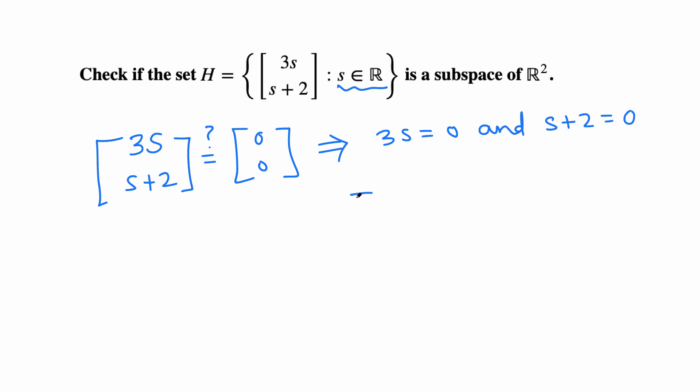So from 3s = 0, dividing by 3 gives s = 0. And from s+2 = 0, subtracting 2 from both sides gives s = -2.